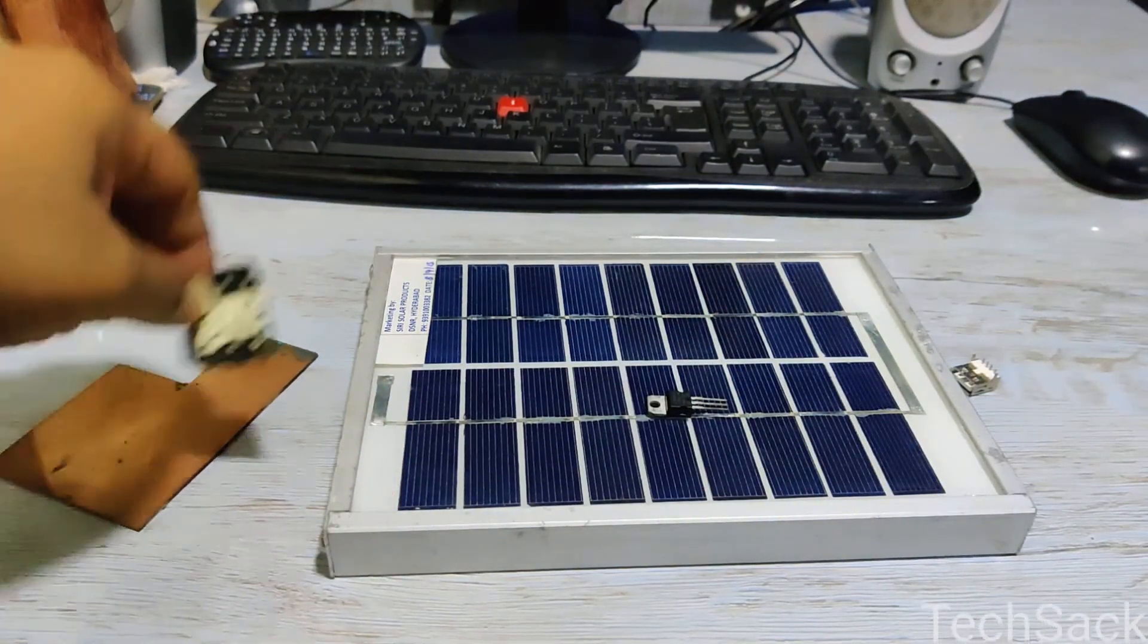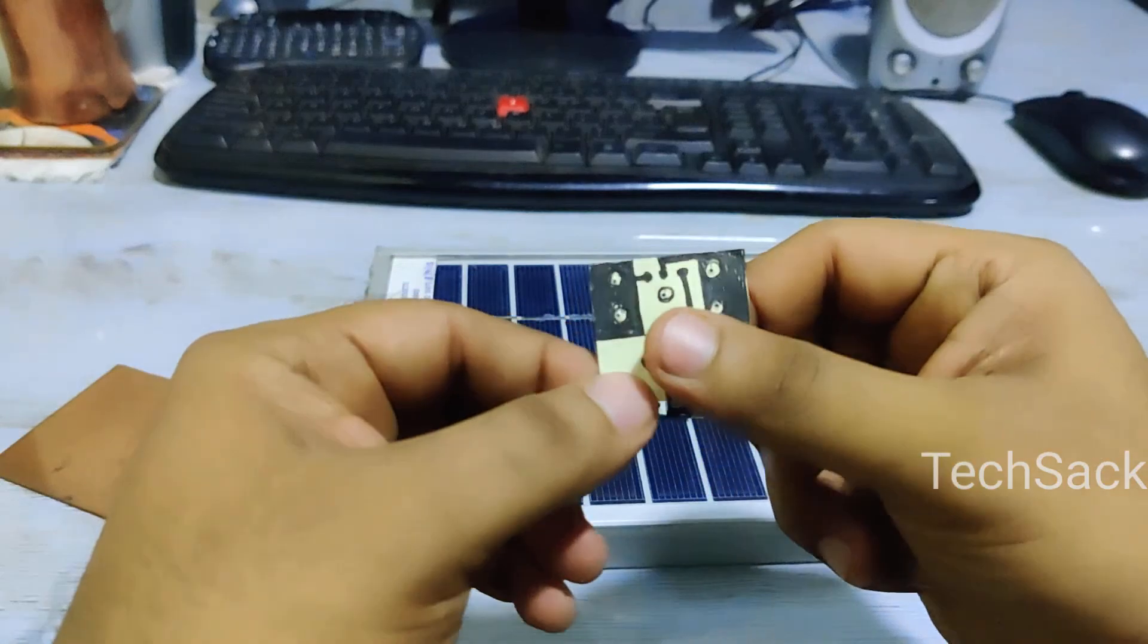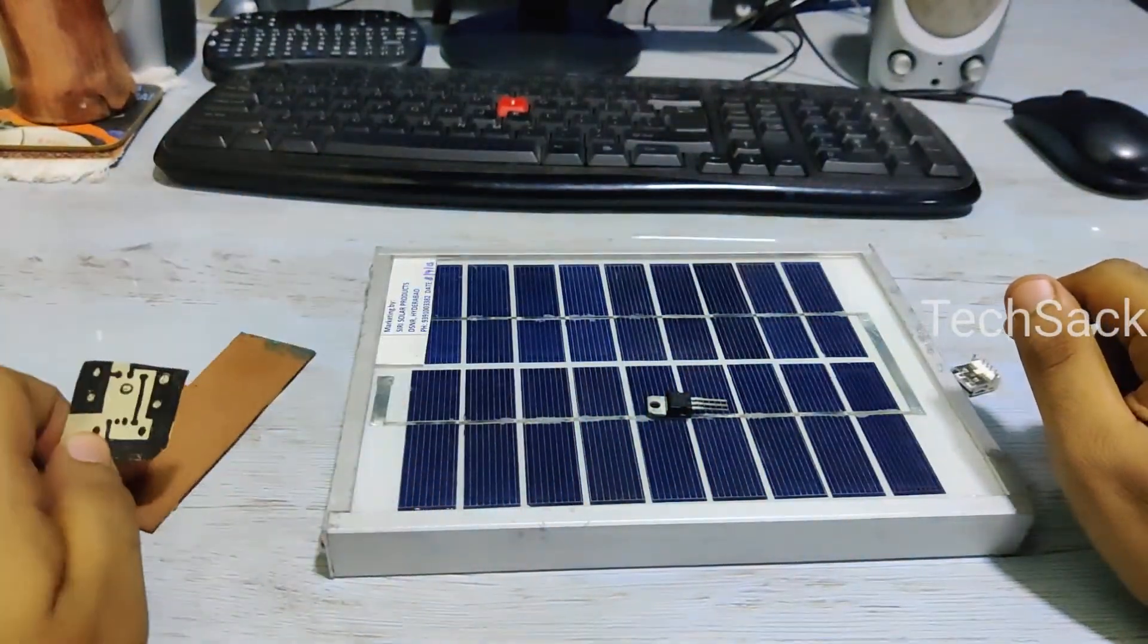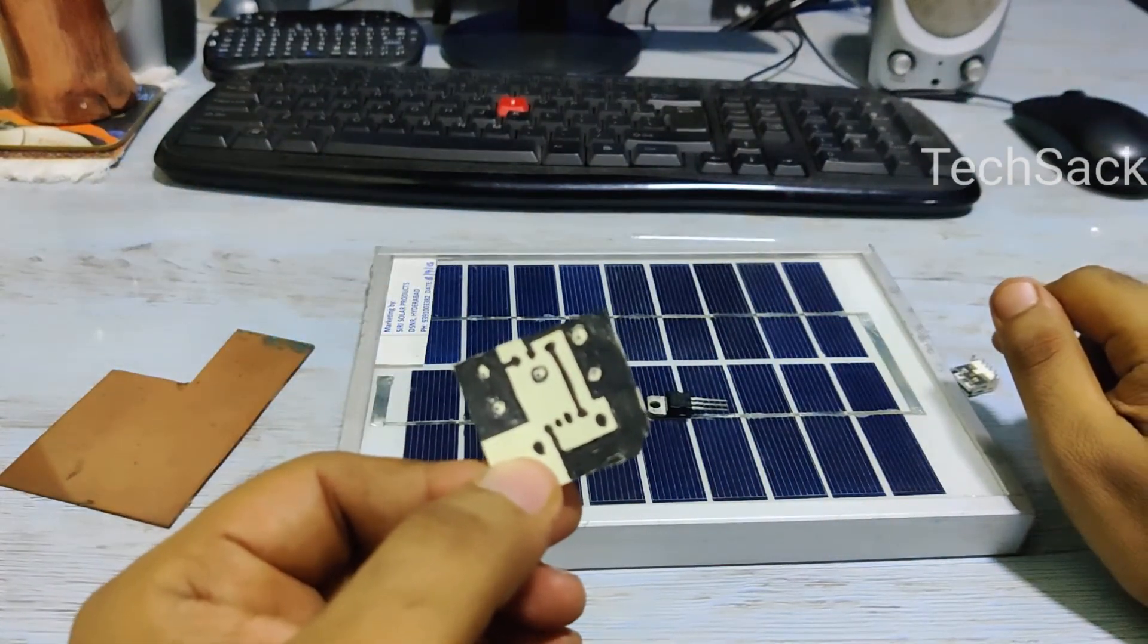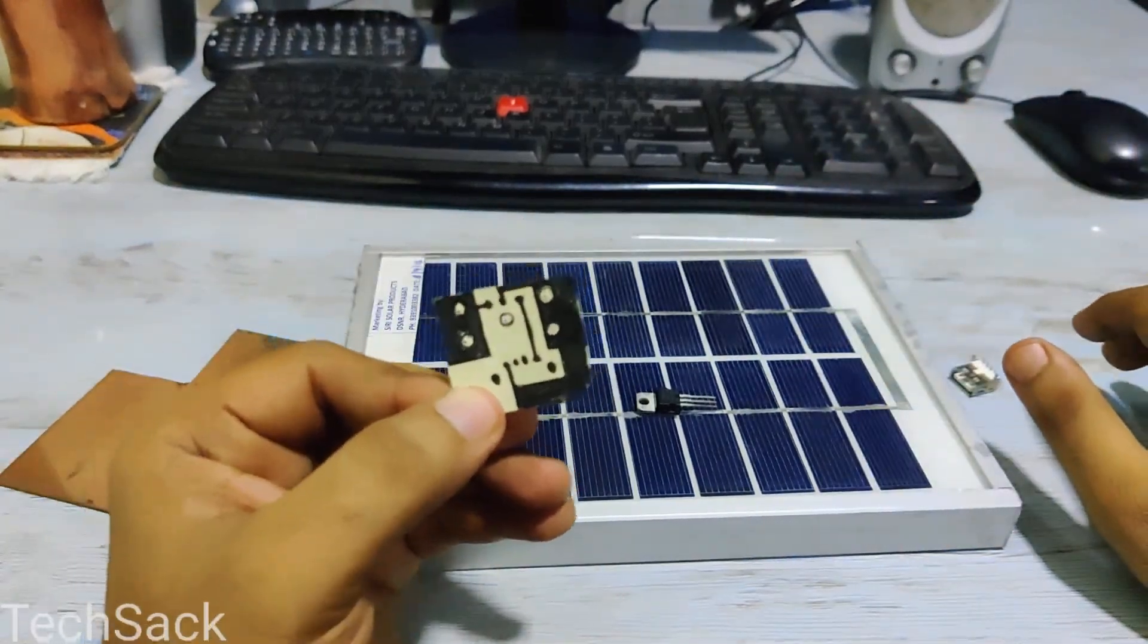To begin with, I would just first replicate this layout on the PCB, get the PCB ready, and then fit the circuit inside the solar panel.